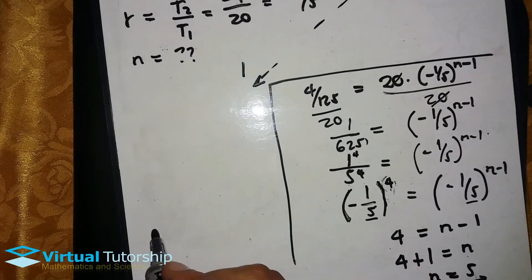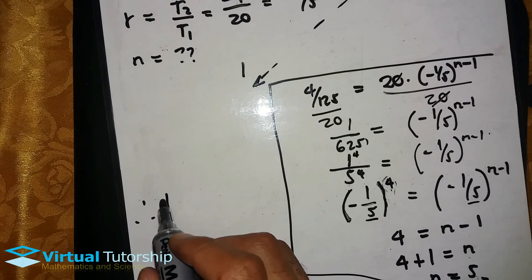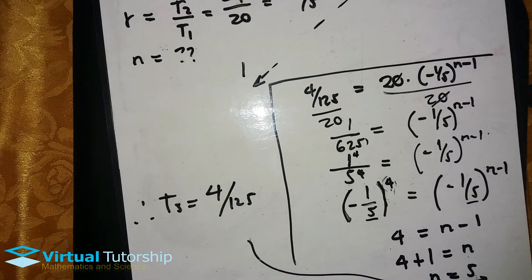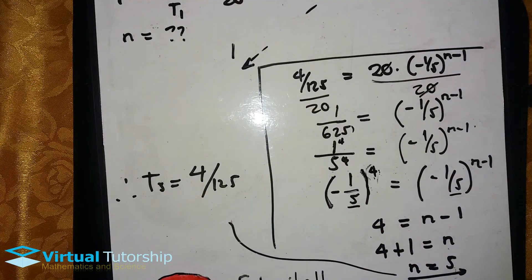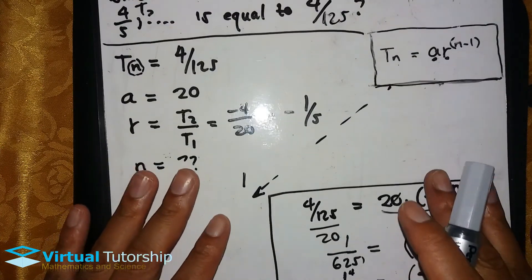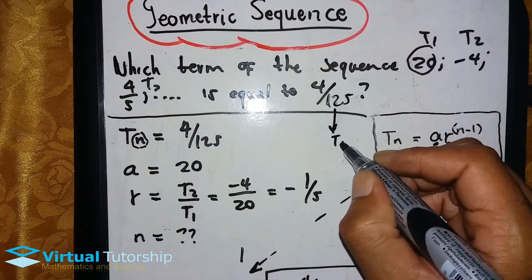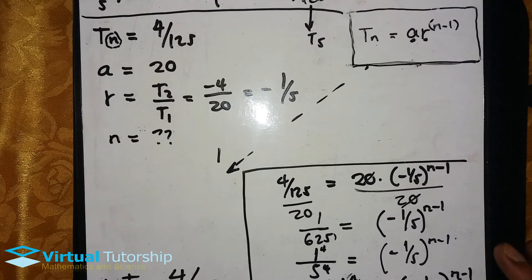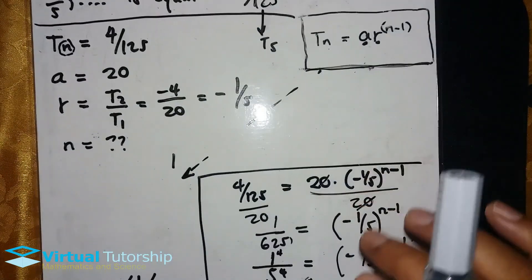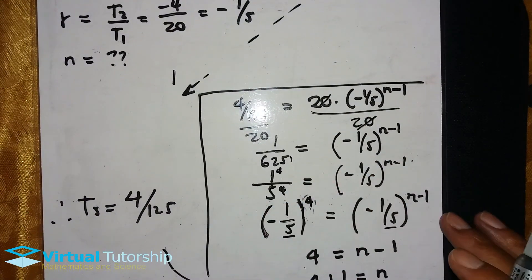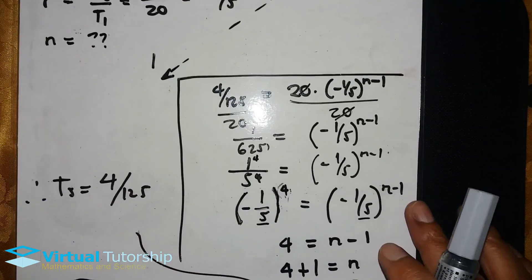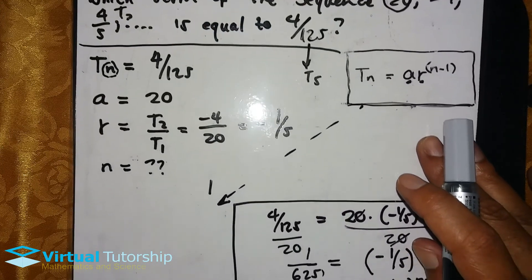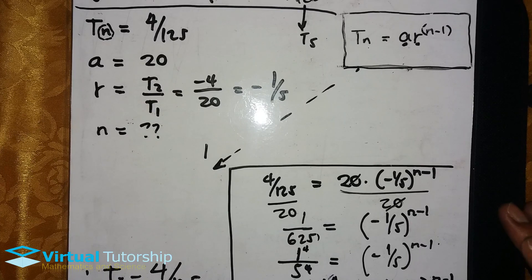Therefore, T5 equals 4/125. In other words, 4/125 is the fifth term, at position number 5 in the sequence. That covers the techniques to solve geometric sequence problems. Thanks for watching. Bye-bye.